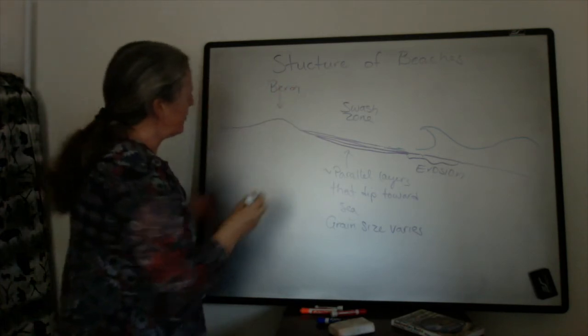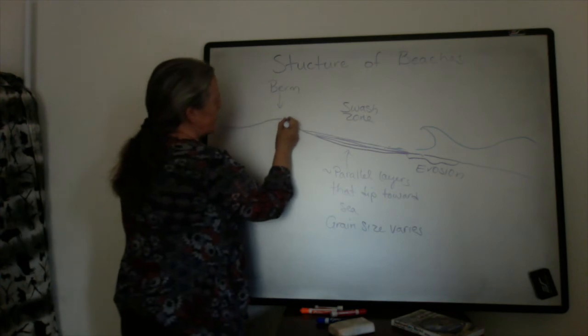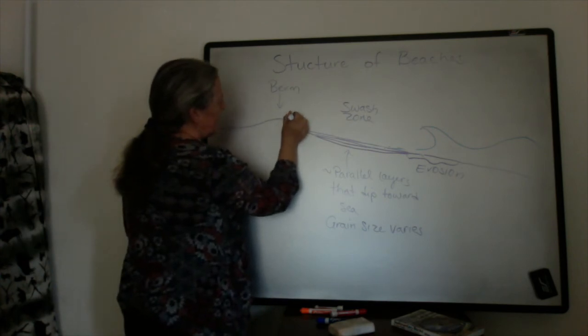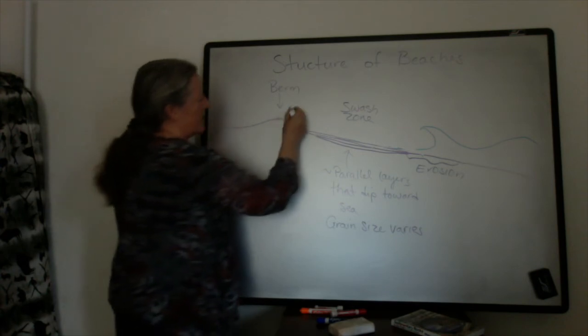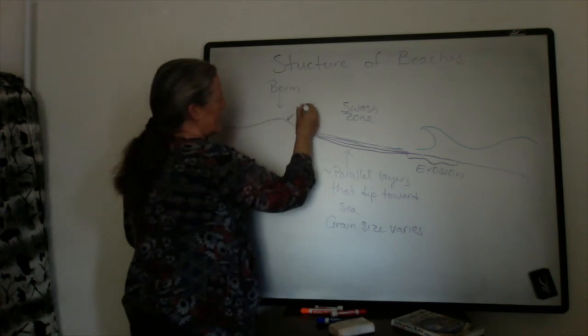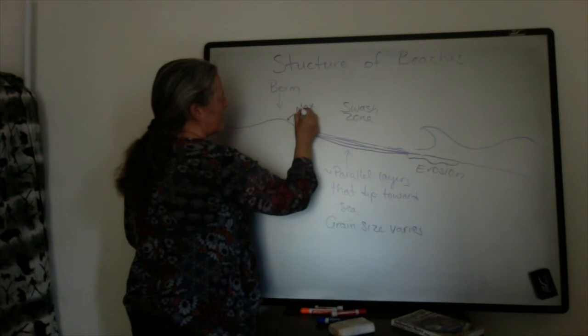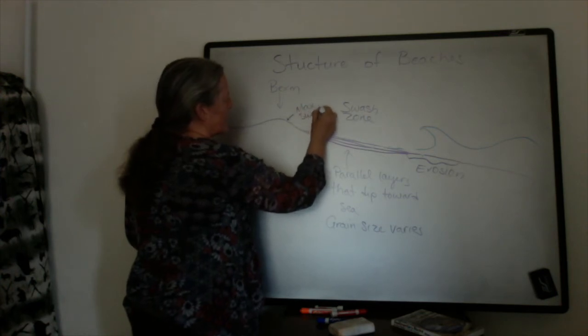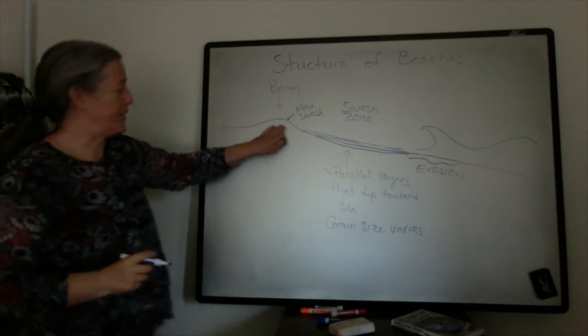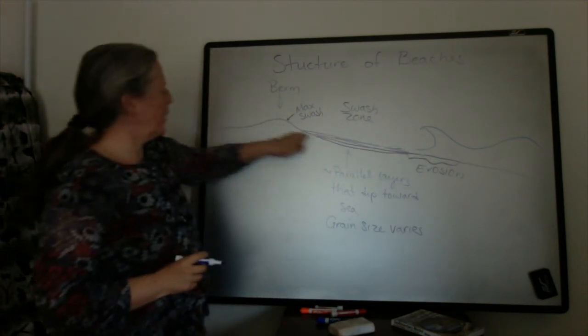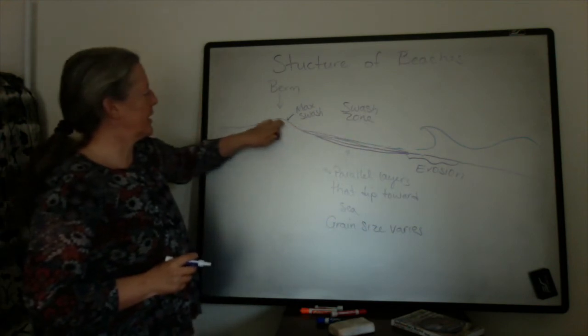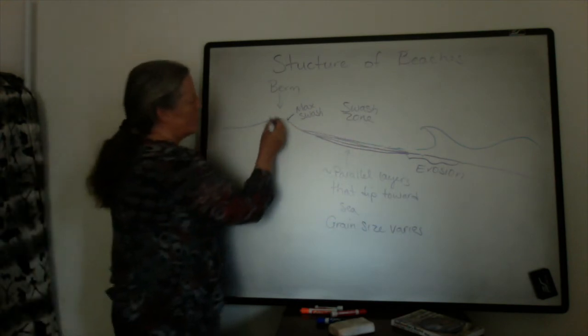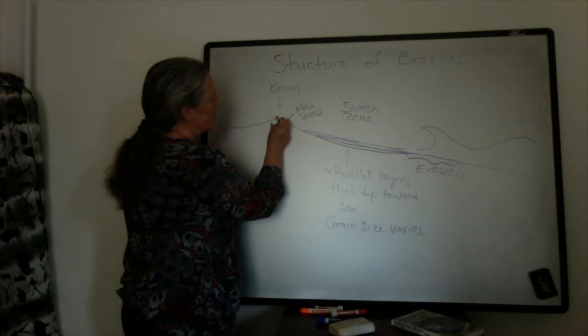The berm is usually created at the maximum height that the swash zone comes up. This is approximately the max swash reaches this area. If you have a big wave that comes all the way up here, it's likely to transport a lot of sand, and then it will stop right here at this berm.